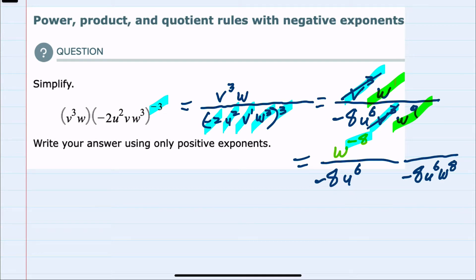And notice that this negative 8 is not a negative exponent. So we can leave negative numbers. We've simplified as much as possible with no negative exponents. So this is our simplified expression.